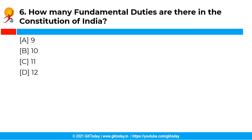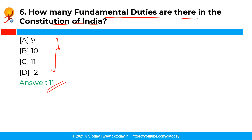The next question is: how many fundamental duties are there in the Constitution of India? The correct answer is 11. There are 11 fundamental duties in the Constitution of India. Originally there were 10. The 11th duty — to provide opportunities for education to a child or ward between the age of 6 to 14 years — was added by the 86th Constitutional Amendment Act of 2002.